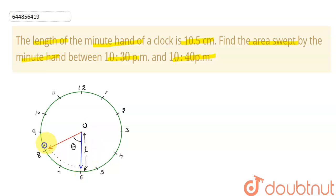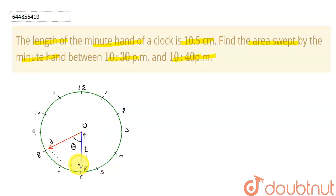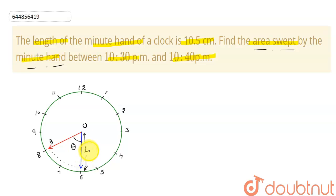The area swept will be the area of the OAB region, which is forming a sector. So I can use the formula for calculating the area of a sector to find the area swept by this minute hand, where the radius will be the length of the minute hand.